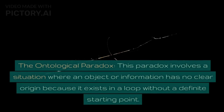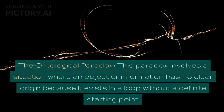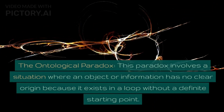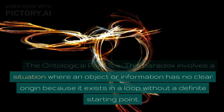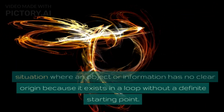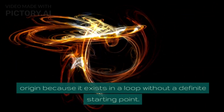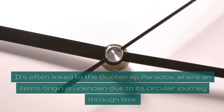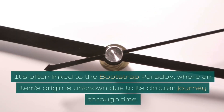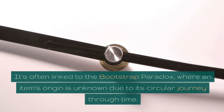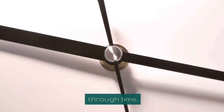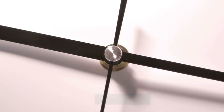The ontological paradox involves a situation where an object or information has no clear origin because it exists in a loop without a definite starting point. It's often linked to the bootstrap paradox, where an item's origin is unknown due to its circular journey through time.